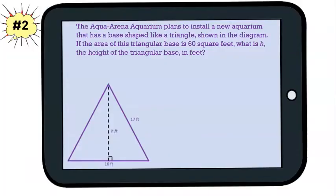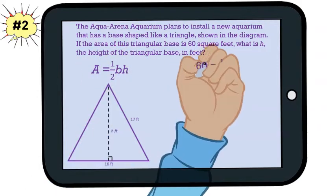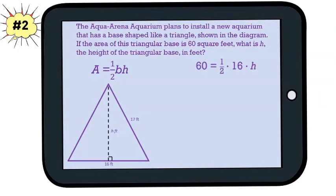Let's try another problem together. The Aqua Arena Aquarium plans to install a new aquarium that has a base shaped like a triangle, shown in the diagram. If the area of this triangular base is 60 square feet, what is h, the height of the triangular base, in feet? Let's write down our formula for area of a triangle, then substitute in the numbers that we know. We have 60 equals one half times 16 times h.